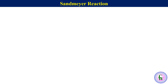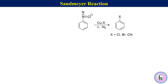In this reaction, an aryl diazonium salt is heated with copper-1 salt to produce chloro, bromo, or cyanoarene. When the same diazonium salt is heated with cuprous oxide, it produces phenol.